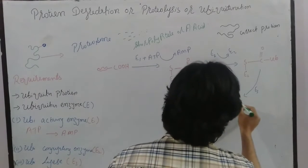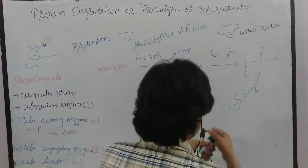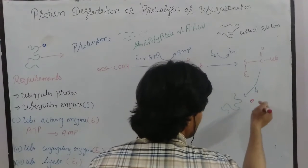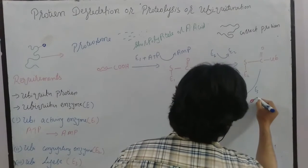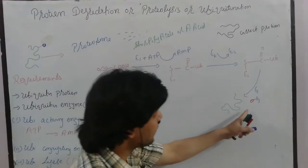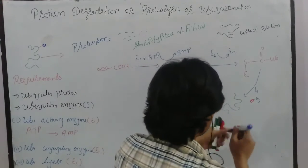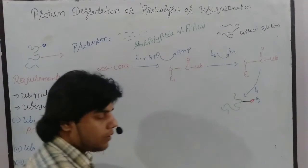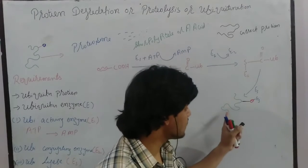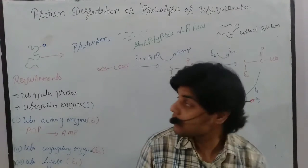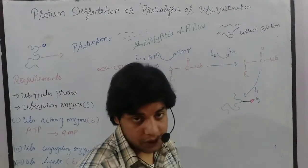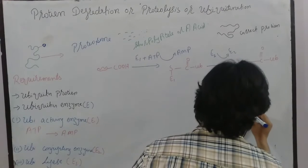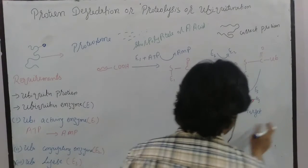The misfolded protein is present, and E3 binds and brings the ubiquitin to it. A bond is then formed between the activated ubiquitin and the misfolded protein by the E3 enzyme. This bond is called an isopeptide bond. Once this bond forms, the protein becomes a targeted protein ready for degradation.